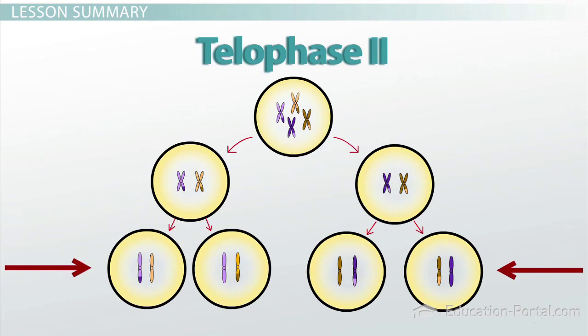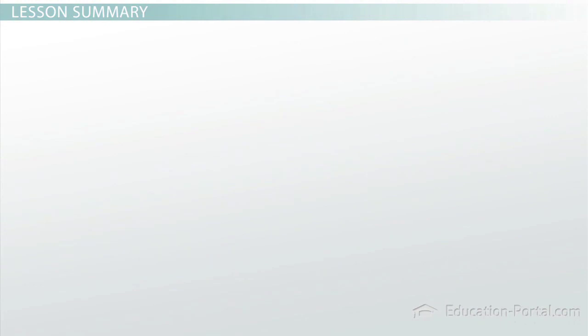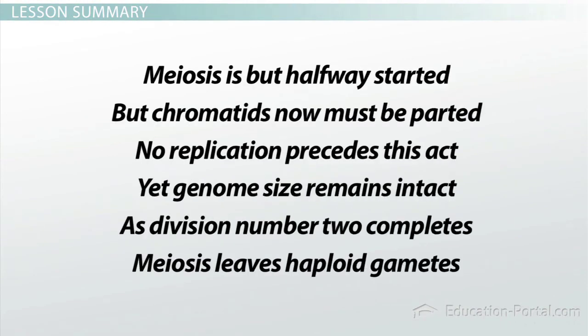As we draw to a close on meiosis and cell division, I'll leave you with one last poetic study. Meiosis is but halfway started, but chromatids now must be parted. No replication precedes this act, yet genome size remains intact. As division number two completes, meiosis leaves haploid gametes.